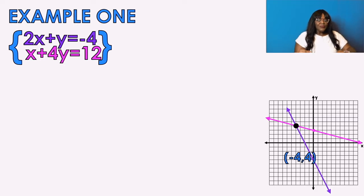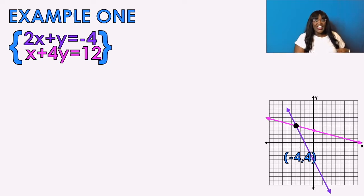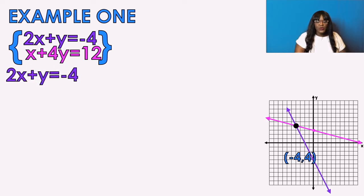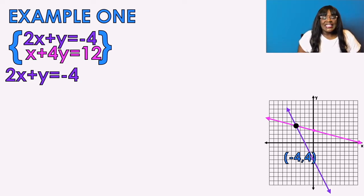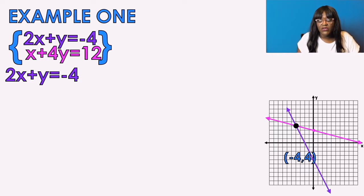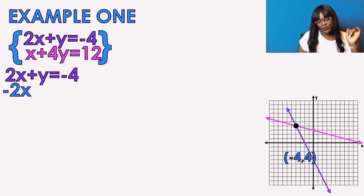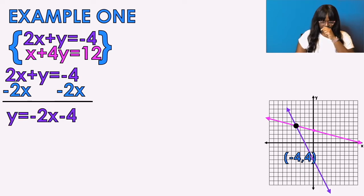So how do I make that happen just doing the math? First, we have to choose an equation — either the pink or the purple. I'm going to choose the purple equation and isolate Y. Why? Because we're really used to isolating Y. Also, there's no coefficient in front of Y in the purple equation, and no coefficient in front of X in the pink equation, so either would work. Since we're comfortable with isolating Y, I'll go with purple. So we subtract 2X from both sides and get Y equals negative 2X minus 4.